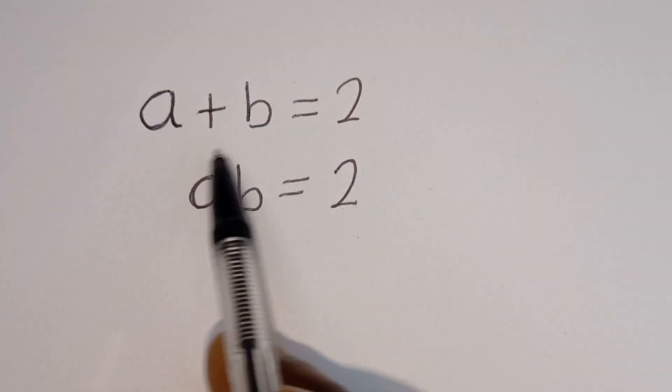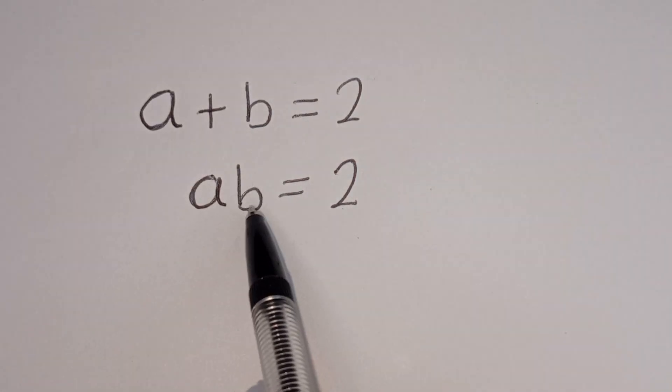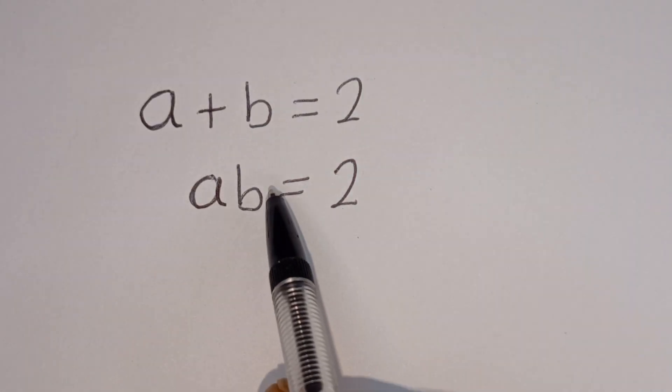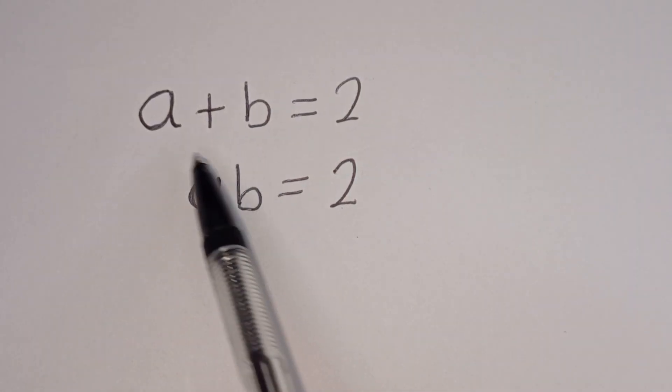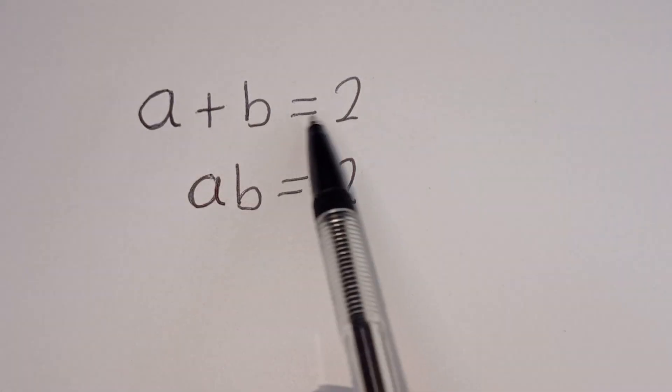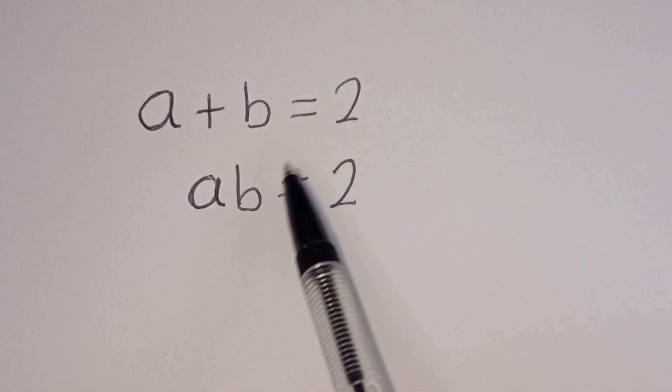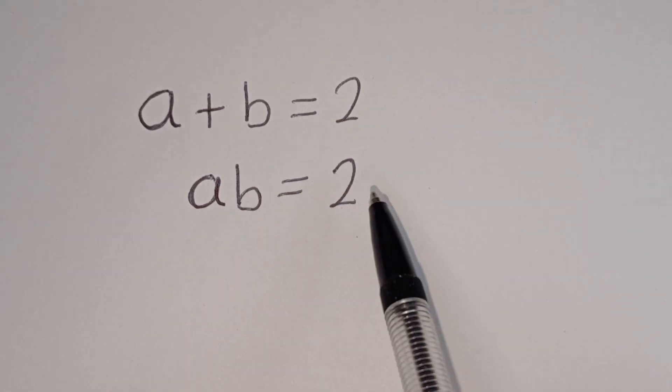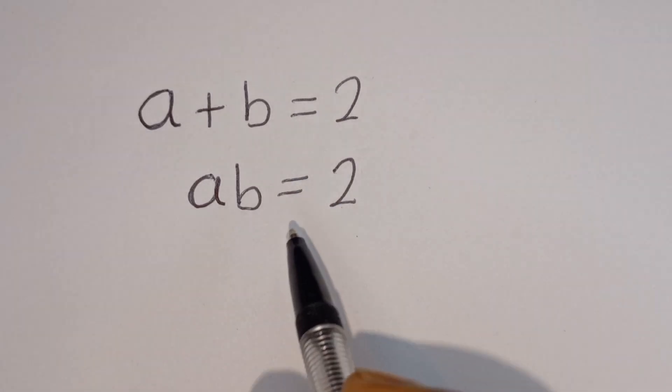Hello. How to solve for A and B in this equation. A plus B is equal to 2. AB is equal to 2.